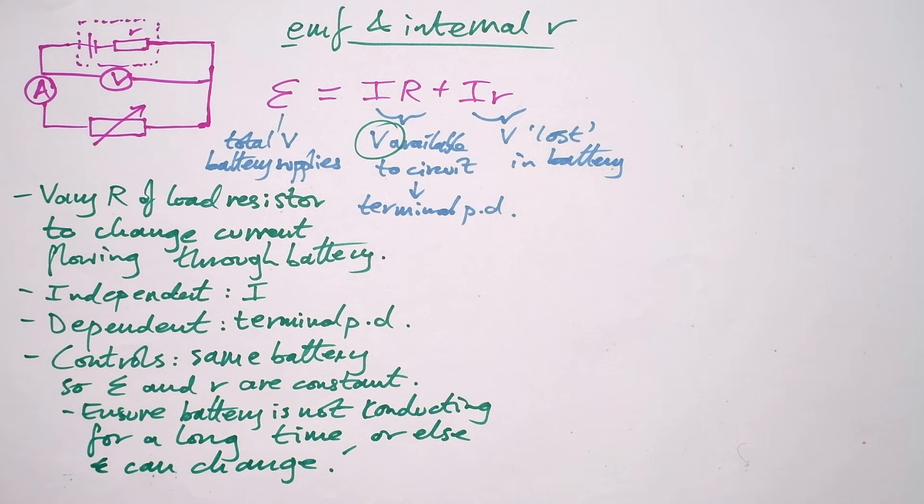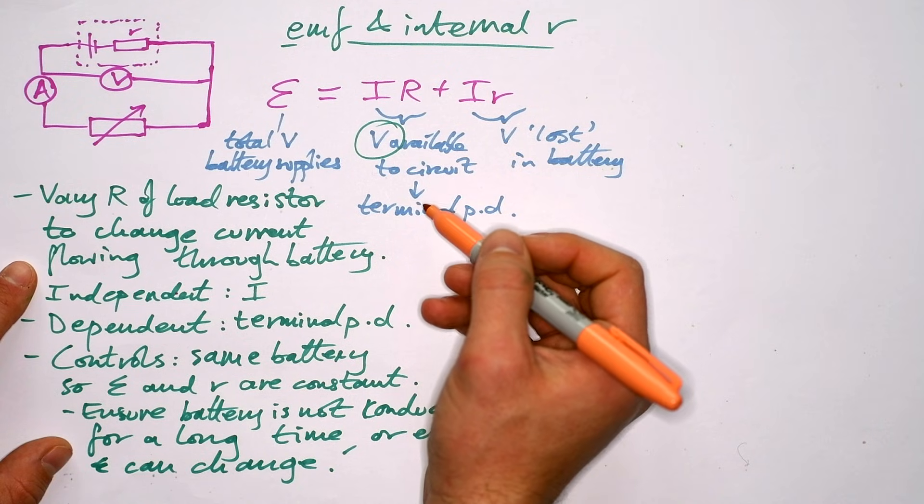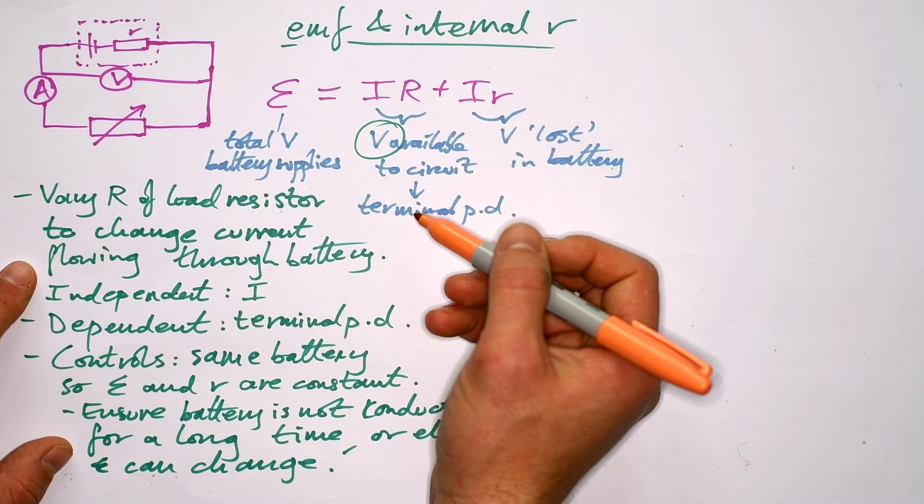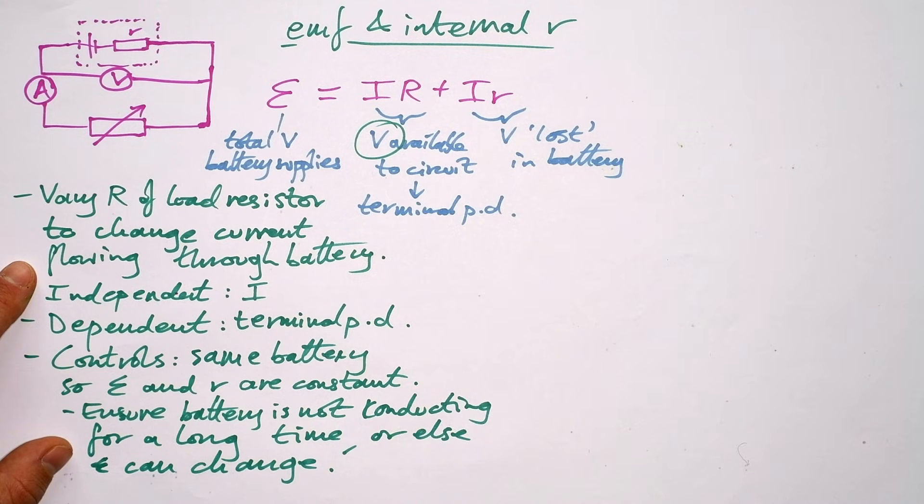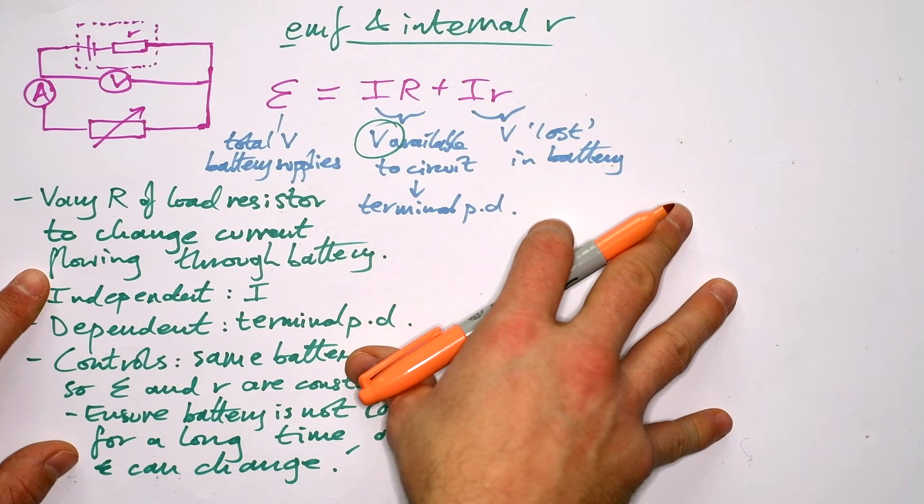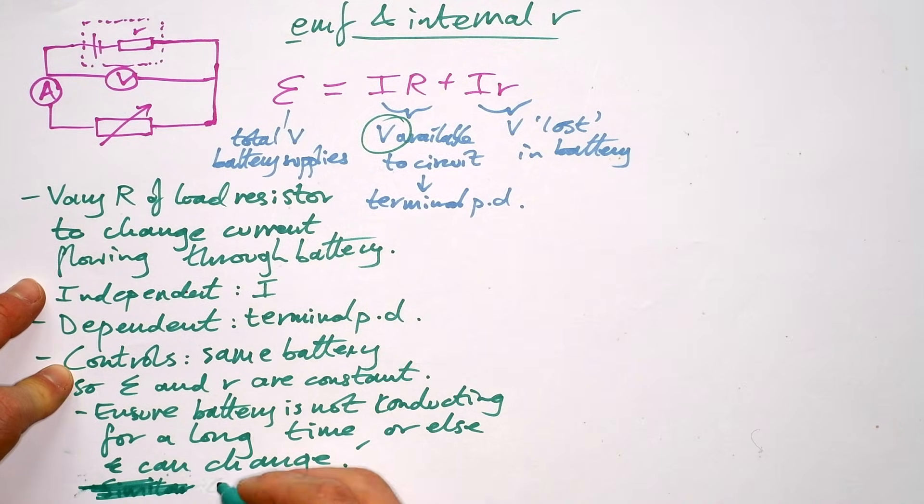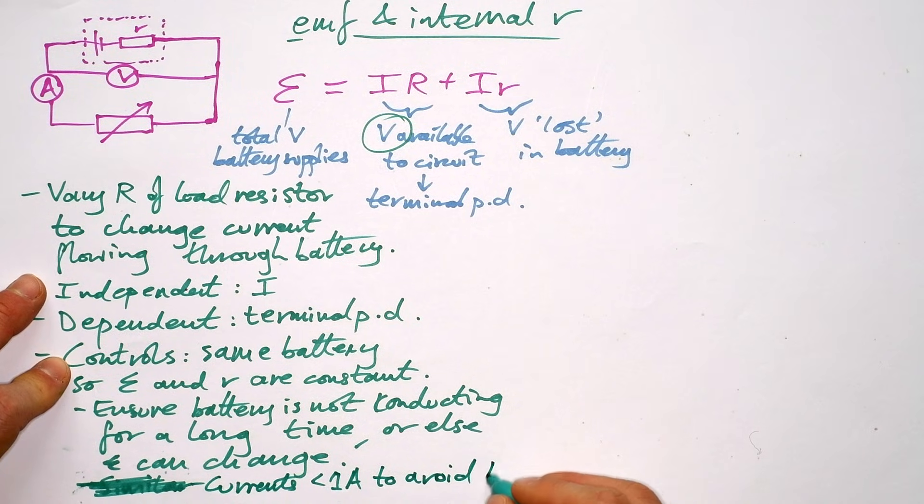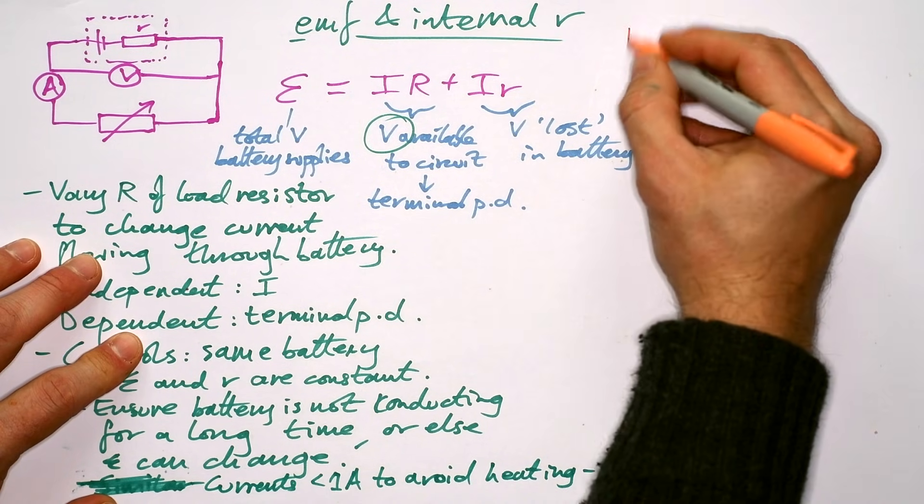Sources of uncertainty. Well, there's not really any, to be honest. The only thing you've got is uncertainty in your current and PD. And that's going to be negligible. It's just going to be the resolution of your ammeter and voltmeter. This is an experiment that I wouldn't do any quantitative analysis of uncertainties for. One thing we can say is go for currents below one amp to avoid lots of heating in the battery. That could affect the internal resistance, and we don't want the internal resistance to change. So you're going to end up with nice results.